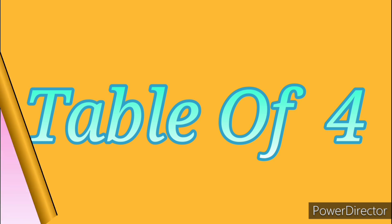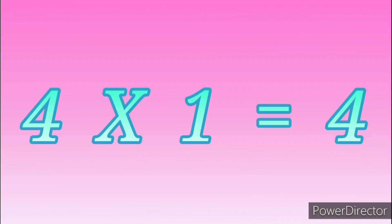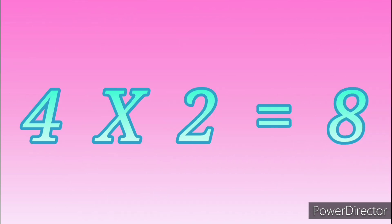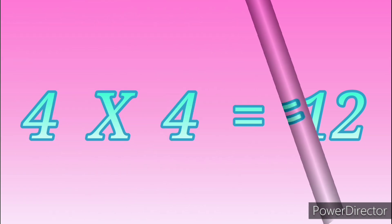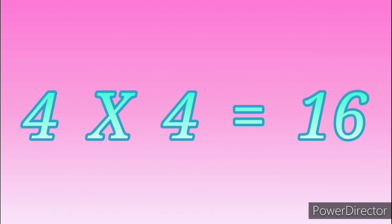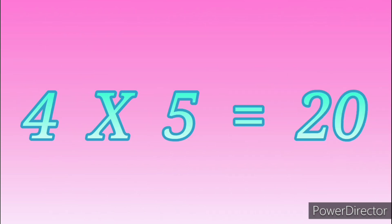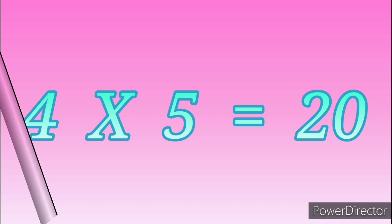Table of Four. 4 ones are 4. 4 twos are 8. 4 threes are 12. 4 fours are 16. 4 fives are 20. 4 sixes are 24.